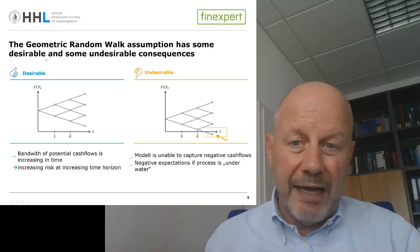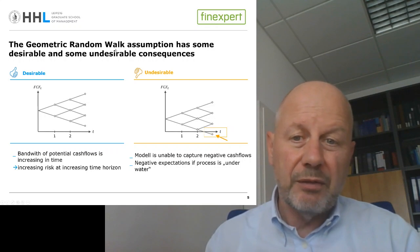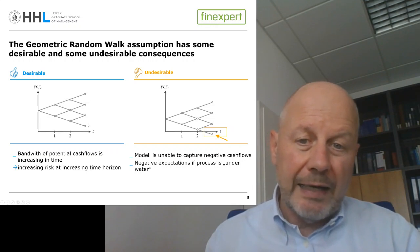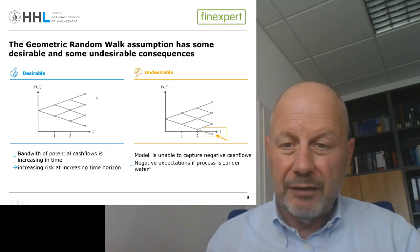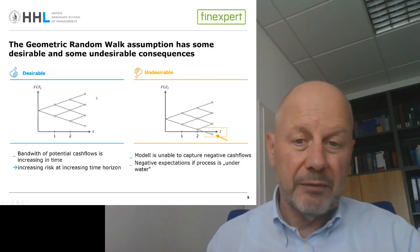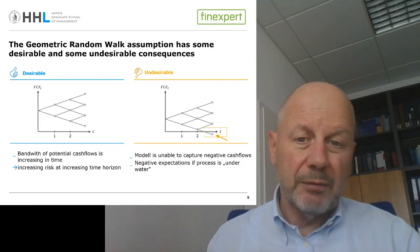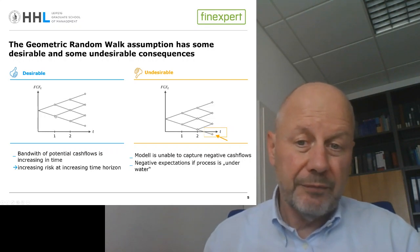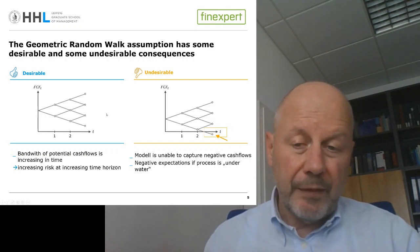On the other hand, the desirable property of this geometric random walk model is that, as you can see here, the further we go into the future, the higher the dispersion of outcomes — again, simply highlighted with a binomial example. And this is realistic: the potential distribution of outcomes of the free cash flow five years out is, of course, higher than the one we think is possible in the next year.